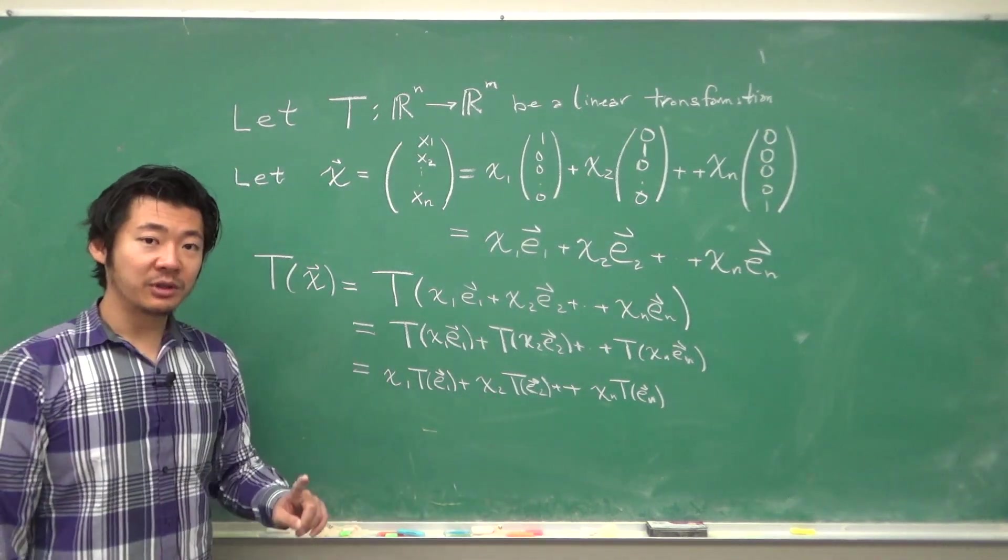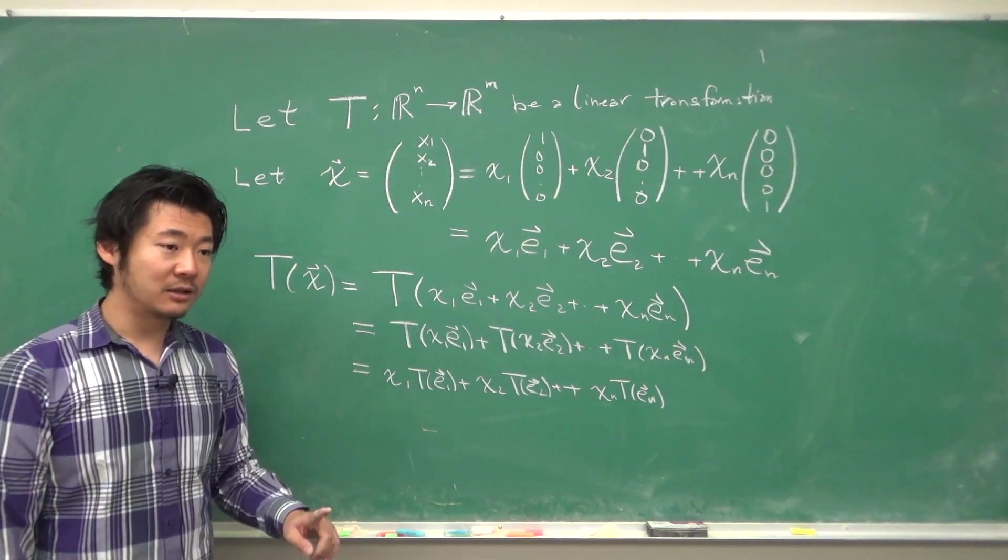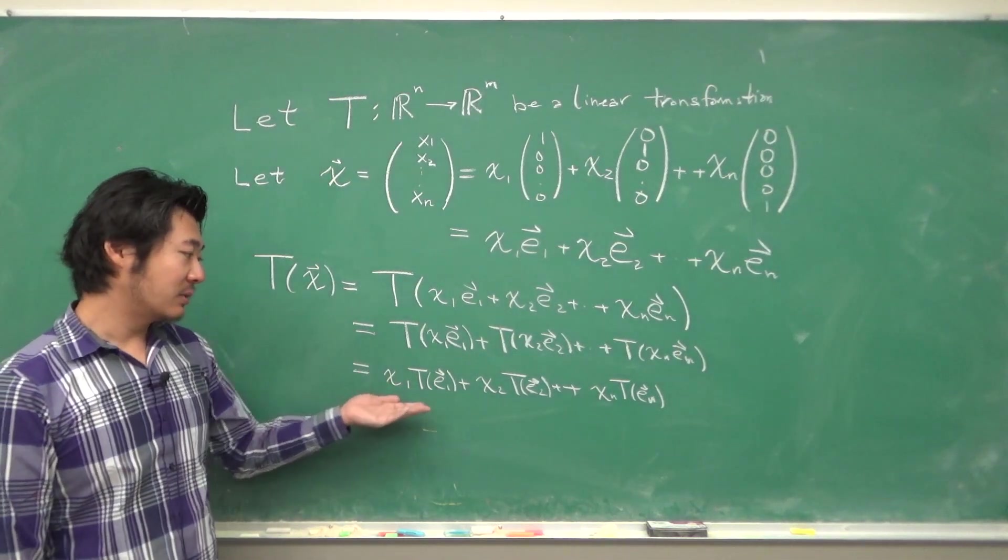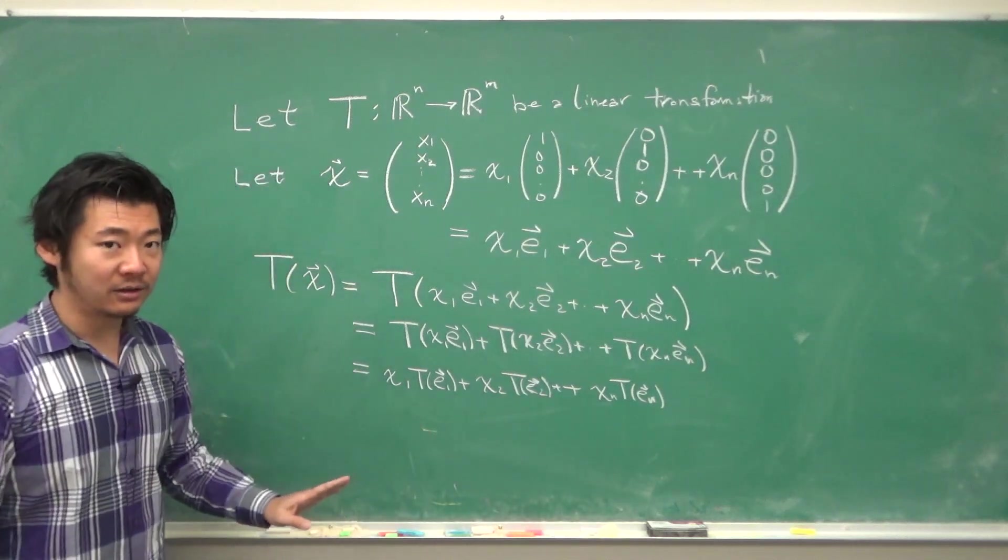Now, matrix multiplication was defined to be a linear combination of its columns with weights x₁, x₂, xₙ as the vector components.